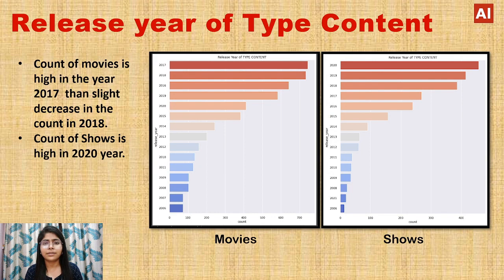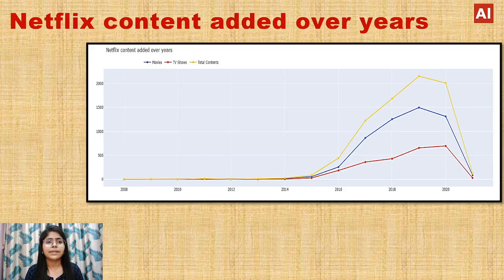Looking at the release year by content type, we have two graphs — one for movies and one for shows. The count of movies is highest in 2017, then slightly decreases in 2018. For shows, the count is highest in 2020. We can also clearly see that the amount of content added to Netflix increased significantly after 2016.